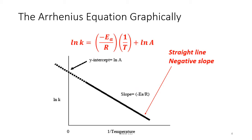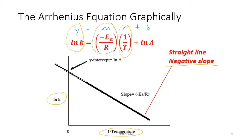This form of the Arrhenius equation is used graphically. It's written in the form of y equals mx plus b. So if we graph on the y-axis the natural log of K versus on the x-axis 1 over the temperature — as long as that temperature is in Kelvin — we will produce a straight line with a negative slope. That negative slope is equal to the activation energy divided by R. If we can figure out what the equation of that line is, we can set the slope equal to Ea over R, and since R is a constant value of 8.314, we can figure out what an unknown activation energy is.